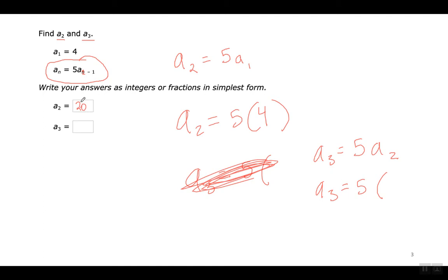So the third term is going to be 5 times the second term, which is 20 — el segundo término, este aquí, el 20. So I'm going to put a 20 here. The answer is going to be 100. Once you realize that this is 5 times the term that came before it, you could just go: 5 times 4 is 20, and 20 times 5 is 100. I'm just multiplying each one times 5 to get the next one.